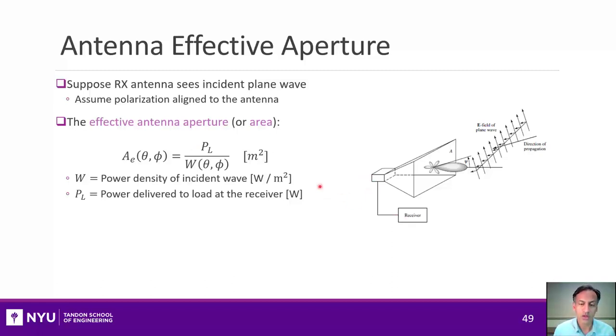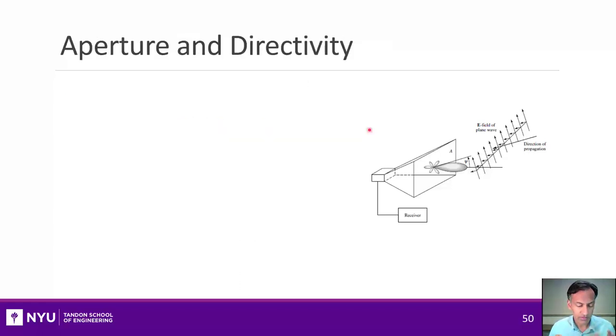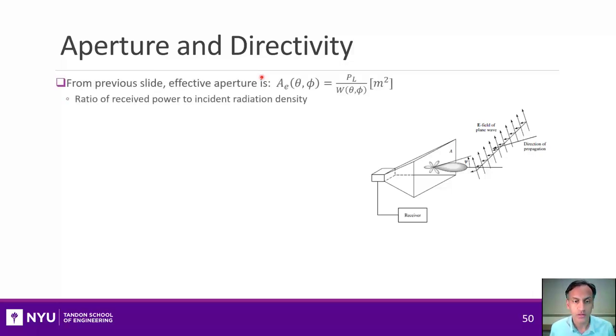It's how much power gets transferred from that electromagnetic wave onto the load. Now, one of the important aspects of this is that this antenna aperture is actually a function in general of the angle of arrival of that incident plane wave. That's why you see this theta and this phi being shown here. There is a very important relation between the aperture, or effective aperture, of the antenna and its directivity, as we defined in the previous section.